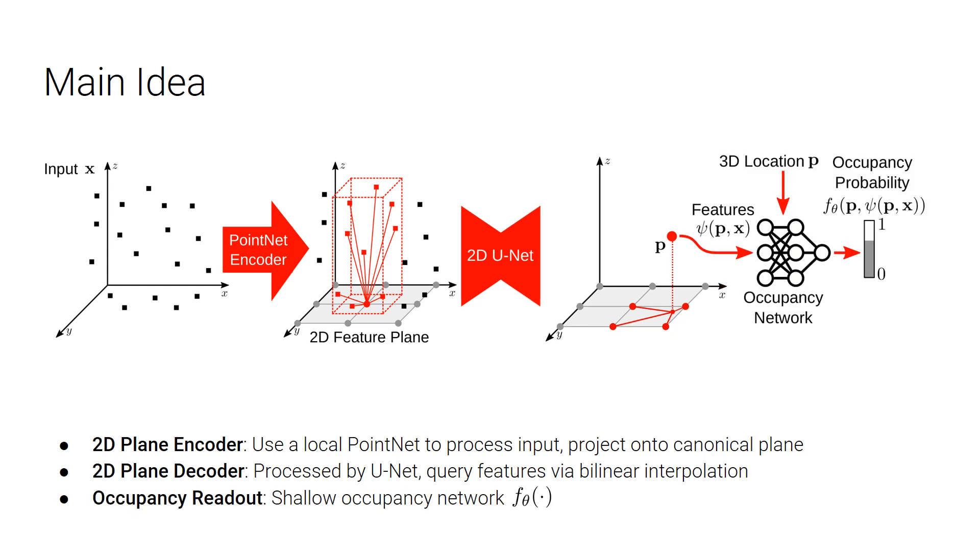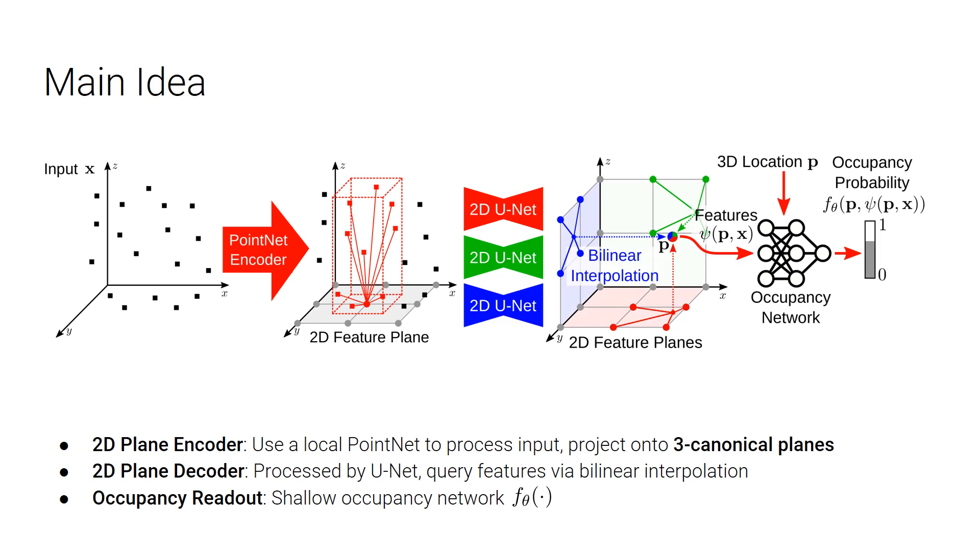Now, because we have a feature with richer local information for every query point, we only require a shallow network to take in a 3D location and its feature, and then predict the occupancy. We can also do the feature encodings for multiple canonical planes, for example, the plane in x, y, and z direction. Now, the final feature for point P is simply the sum of the features correlated from these three feature planes.